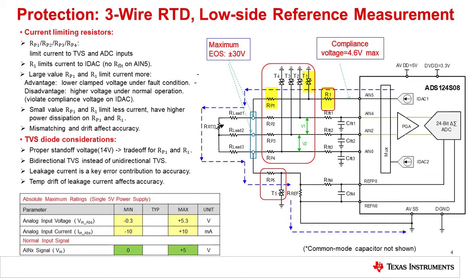Another tradeoff to consider is that when using a small value for the RP1 and R1 resistors, there will be higher fault currents and consequently higher power dissipation on the resistors and TVS diodes. If the power dissipation is too high, the power rating on the resistor can make the physical size and cost of the resistor unreasonable. The absolute maximum input to the ADC ranges from minus 0.3 volts to 5.5 volts. With this range in mind, you would expect the TVS to be a unipolar device with a forward voltage of minus 0.7 volts and reverse standoff of 5 volts.